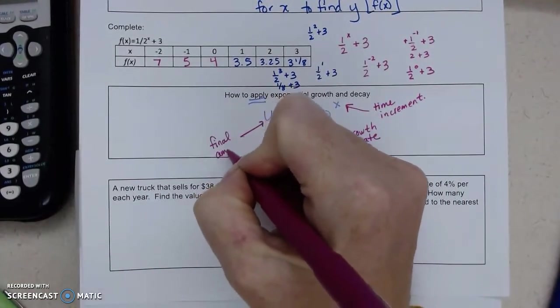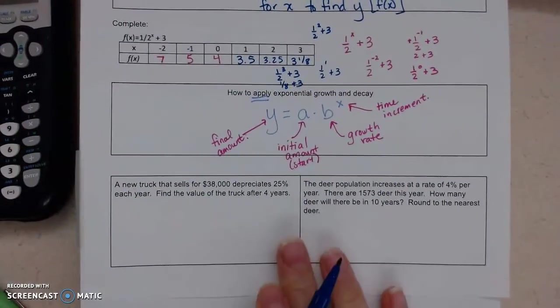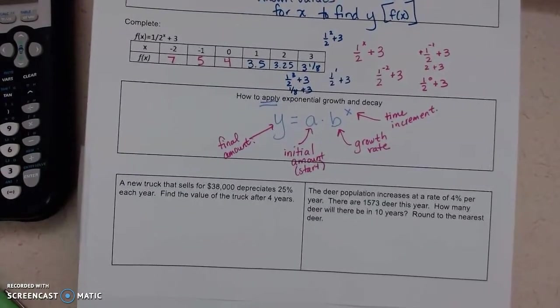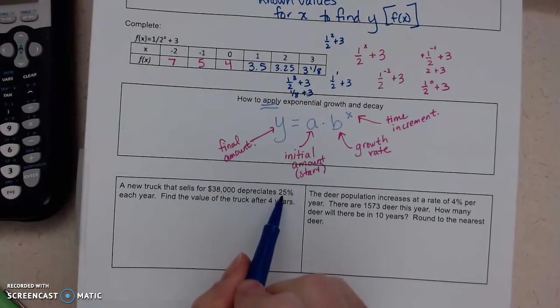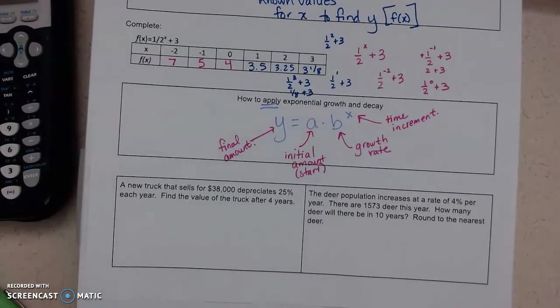Okay, so let's look at our first example. We're going to talk about trucks. So trucks depreciate. This truck sells for $38,000 and it depreciates 25% each year. So we want to find out how much is the truck worth after four years.